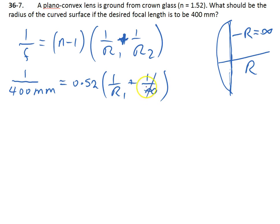1 over infinity is 0. And therefore, we're left with 1 over 400 mm is equal to 0.52, which is a number and has no units, divided by r1.